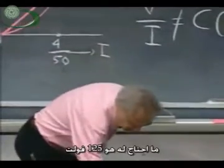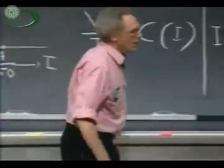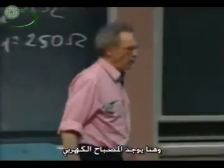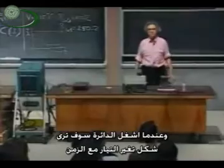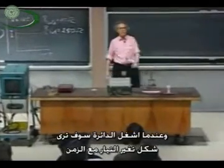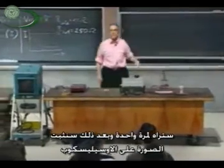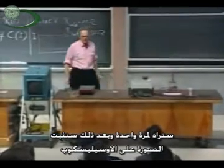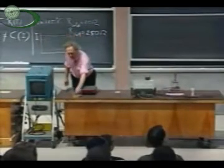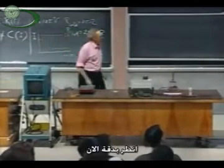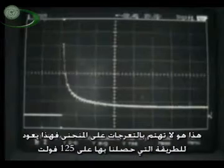So here we need 125 volts. And there is the light bulb. And when I throw this switch, you will see the pattern of the current versus time. You only see it once and then we freeze it with the oscilloscope. Turn this off. So look closely now. There it is.